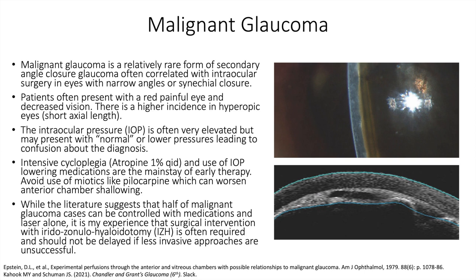Malignant glaucoma is a diagnosis of exclusion and more common processes should be considered and ruled out with clinical exam and ultrasound as appropriate. Some of the differential diagnoses include pupillary block with angle closure glaucoma, choroidal effusion, and suprachoroidal hemorrhage.